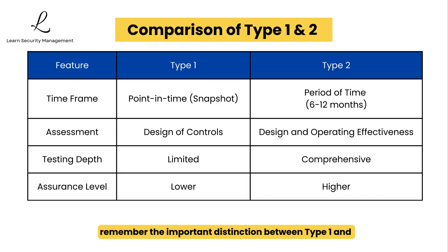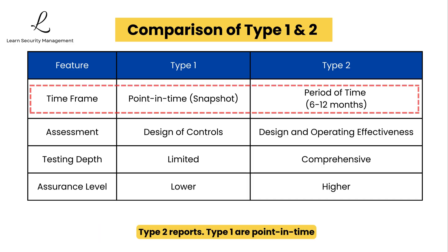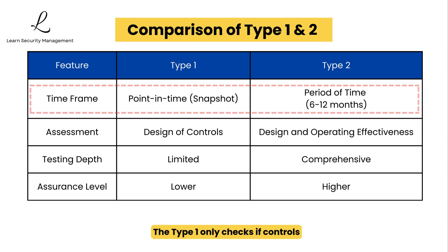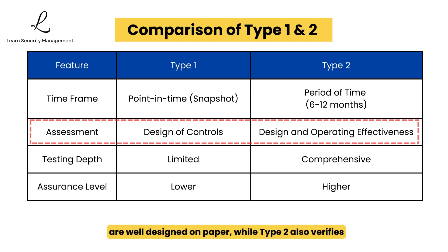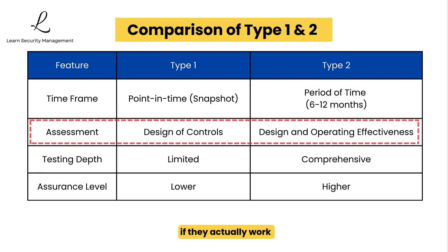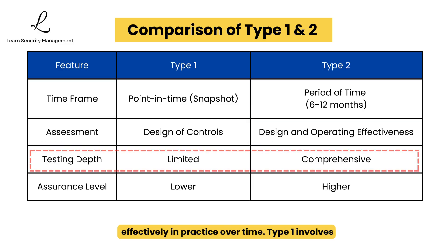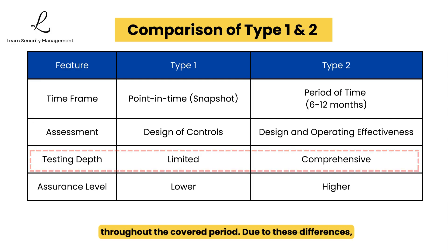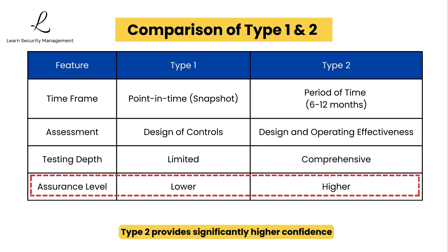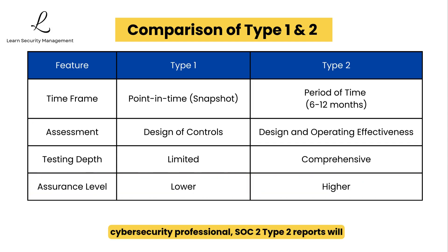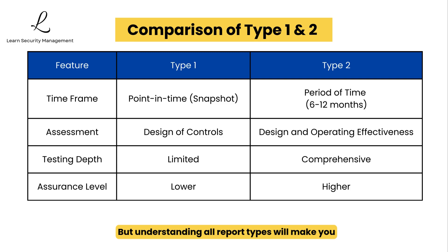Remember the important distinction between Type 1 and Type 2 reports. Type 1 are point-in-time, whereas Type 2 cover a period of time — typically 6 to 12 months. Type 1 only checks if controls are well designed on paper, while Type 2 also verifies if they actually work effectively in practice over time. Type 1 involves limited testing procedures, while Type 2 includes extensive sampling, observation, and testing throughout the covered period. Due to these differences, Type 2 provides significantly higher confidence and assurance that an organization's controls are reliable and sustainable. SOC 2 Type 2 reports will likely be the most relevant to your day-to-day work, but understanding all report types will make you more effective when communicating with different stakeholders.